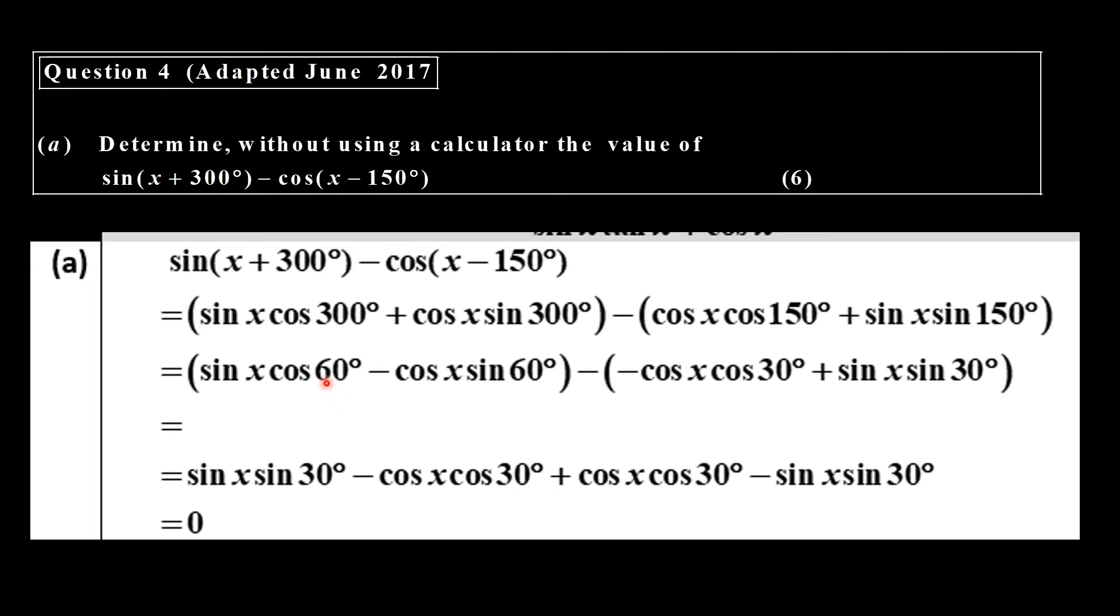Now a 60 and a 30 are co-ratio. So cos of 60, you can replace it with sin of 30. Sine of 60 becomes cos of 30, so you just got 30s all over. And you can see this term cancels with that term. This term cancels with that term, so our answer is zero.